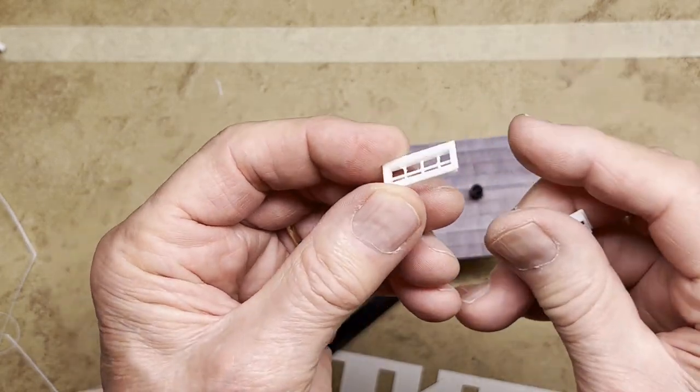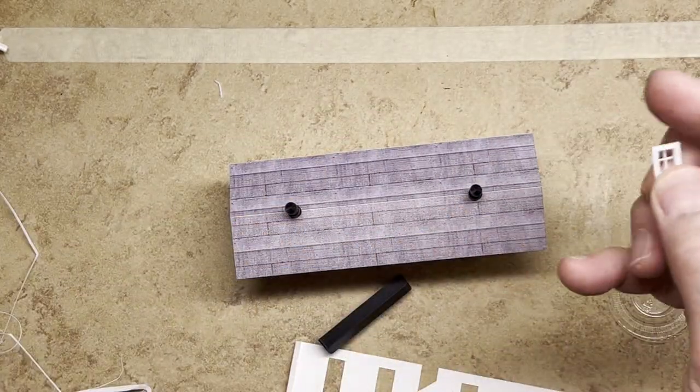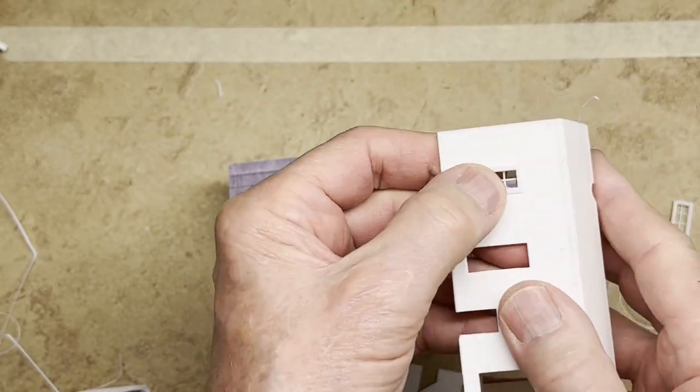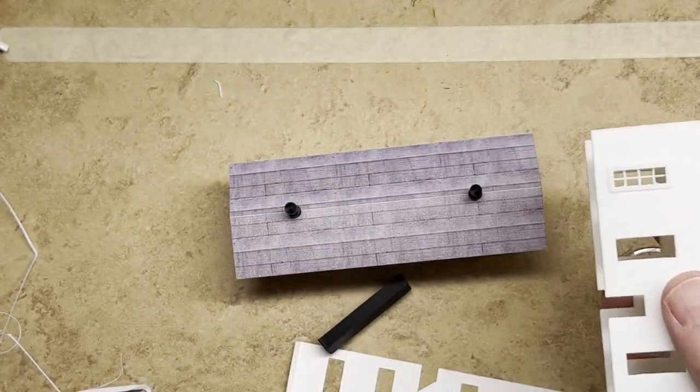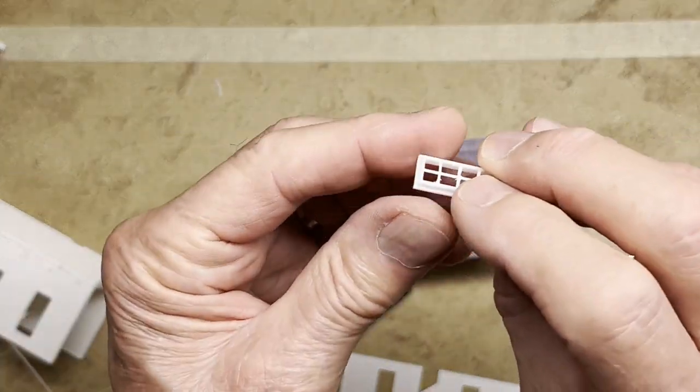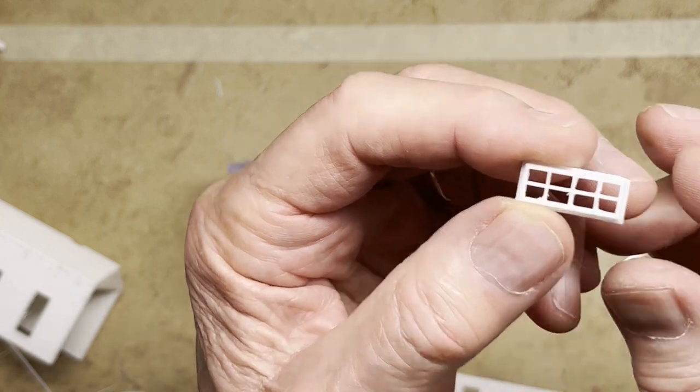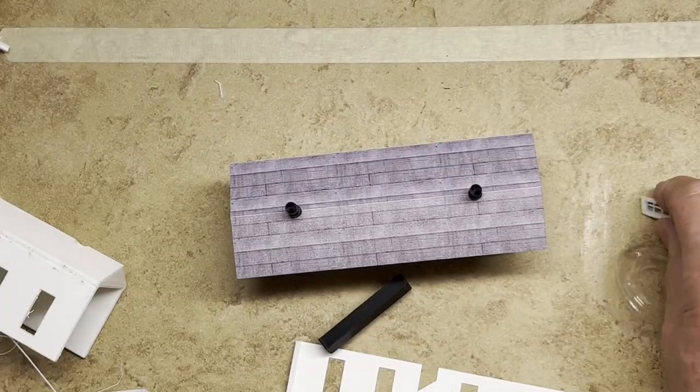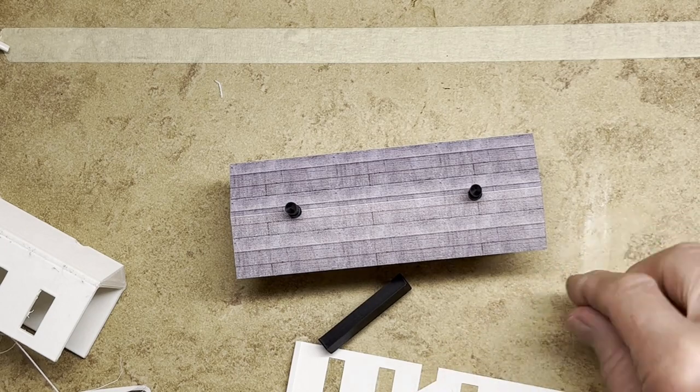And then the windows are straightforward. Just a bunch of rectangles made so they fit into the holes. Doors are similar. See how nicely these come out from the resin printer? They're just absolutely perfect. And that's how you put this thing together.